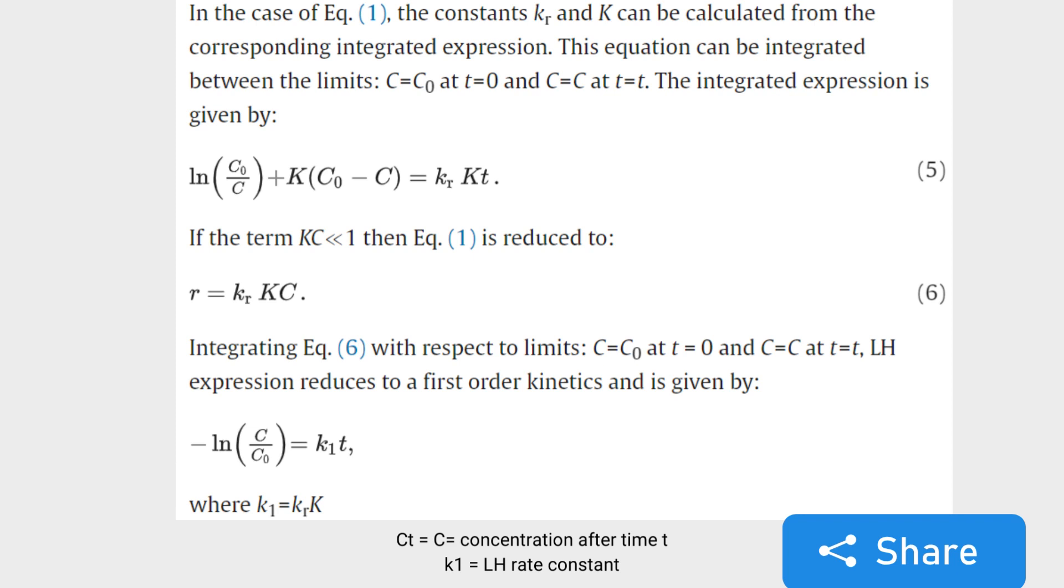We get -ln(C/C₀) = k₁*t, where k₁ = kr*K. Here C = Ct is the concentration after time t, and k₁ is the Langmuir-Hinshelwood rate constant.